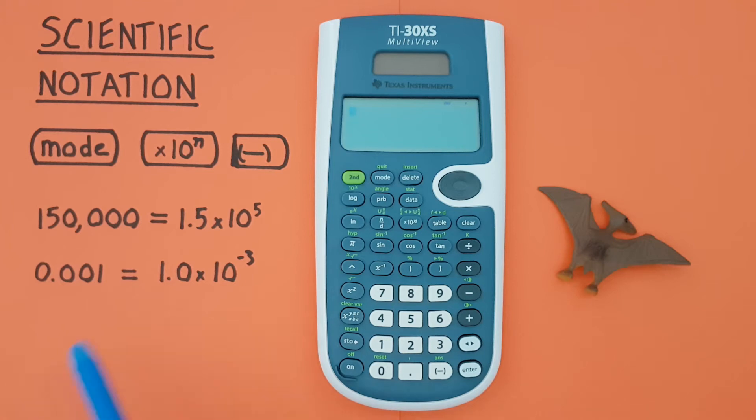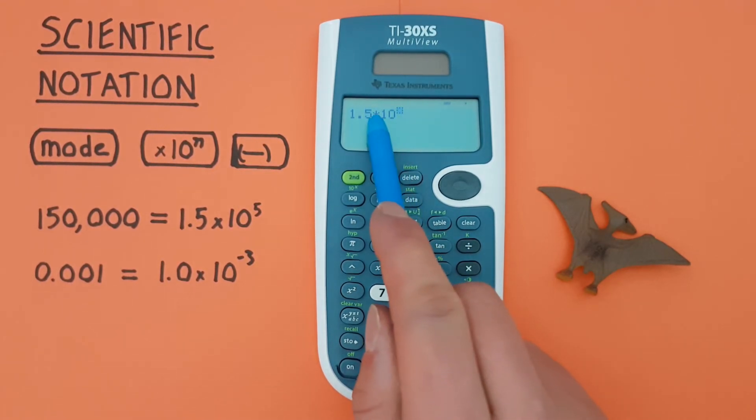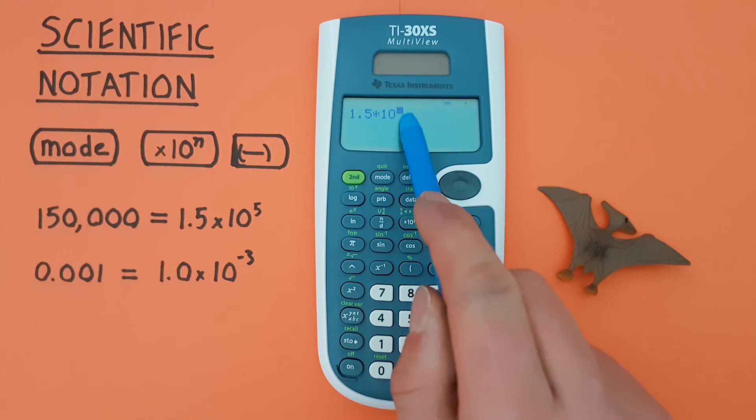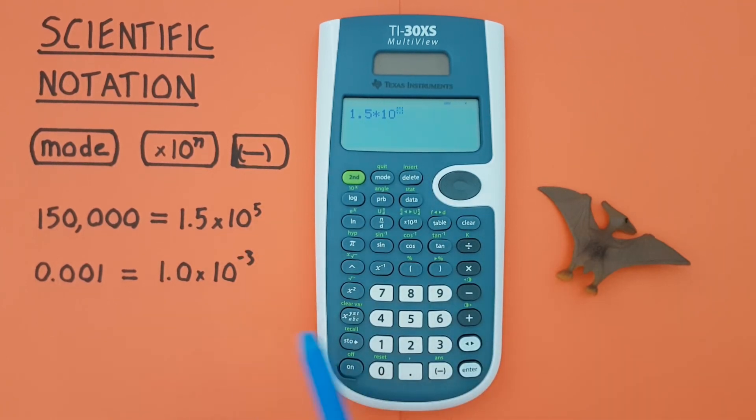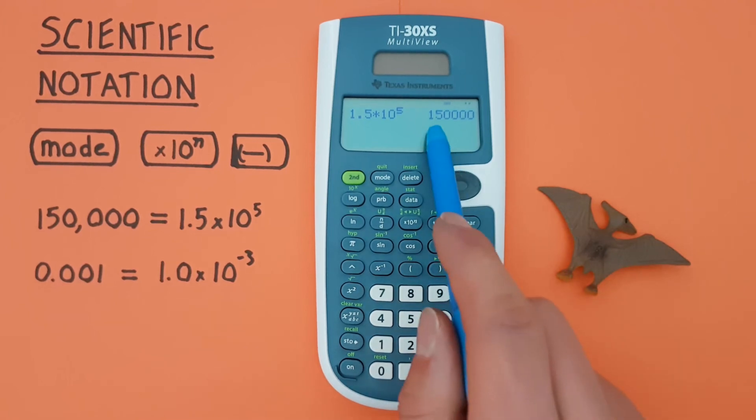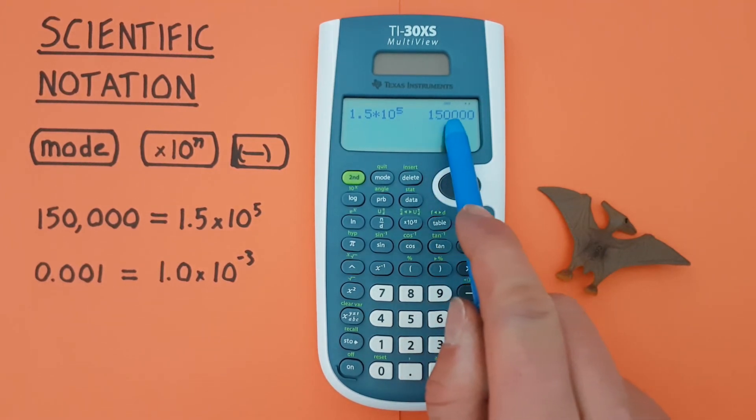But let's say we are given the numbers in scientific notation and want to enter them on our calculator like that. Well to do that we use the times 10 to the n key. So if we wanted to enter 1.5 times 10 to the power of 5, we would start with the 1.5 and then the times 10 to the n key. There we see it goes times 10 and then lets us enter our exponent. In this case it's 5 and we press enter and we see that's the same as 150,000.